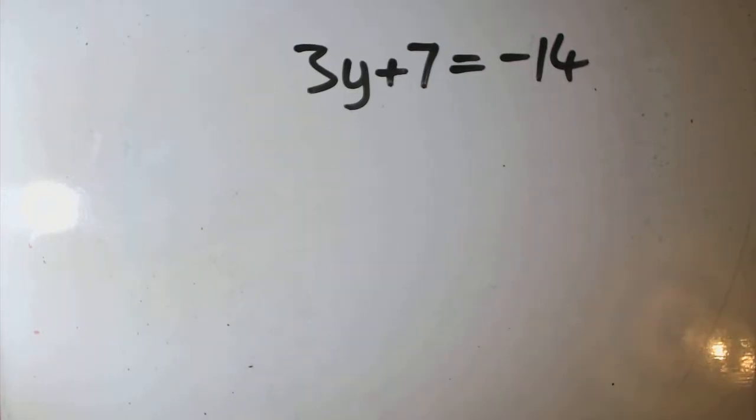And here's question 5. Okay, so 3y plus 7 equals minus 14.